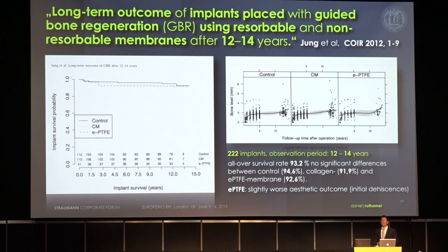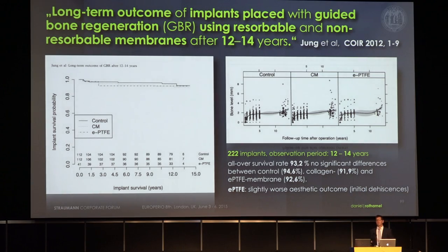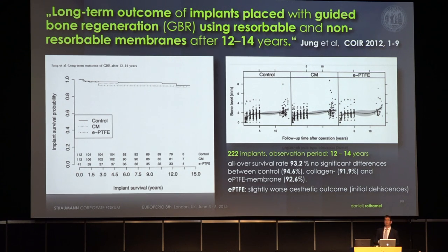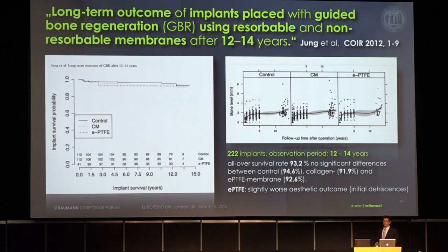Is lateral augmentation using GBR technique long-term stable? A study by Ronny Jung and co-workers after 12 to 14 years found no statistically significant difference whether implants were placed in pristine bone or in bone grafted with bovine bone substitute material covered with a collagen membrane or a non-resorbable membrane. Interestingly, even after this time they found a negative effect from initial dehiscences of the ePTFE membranes. Our preferred technique is to use a bovine bone substitute material in combination with a collagen membrane.